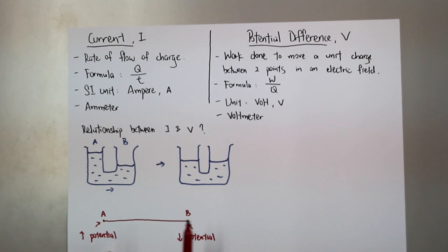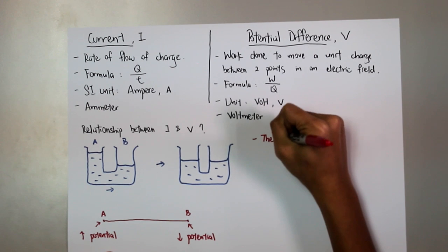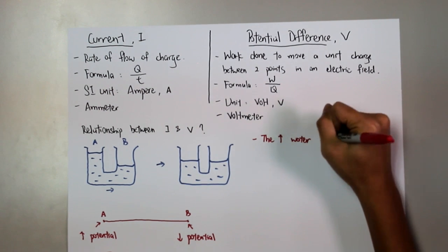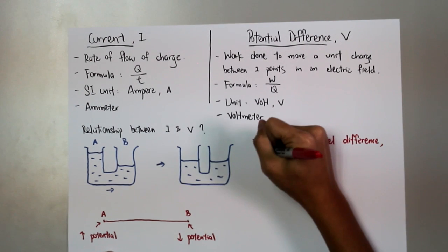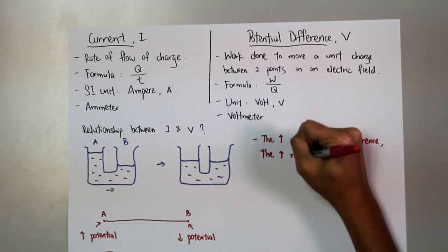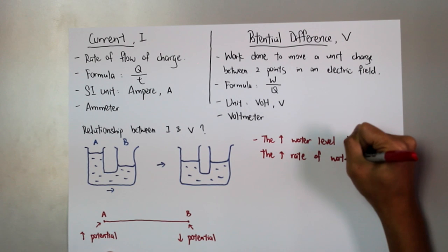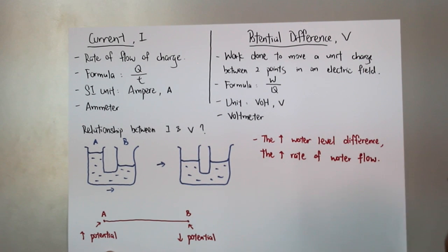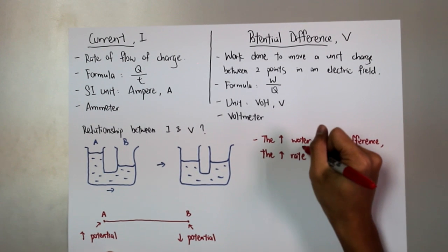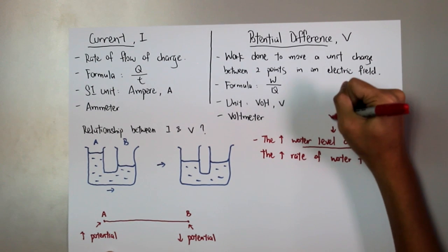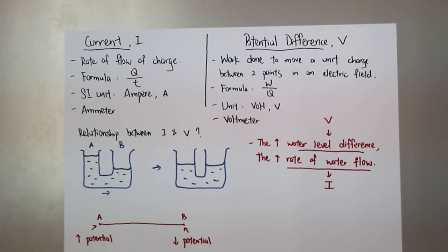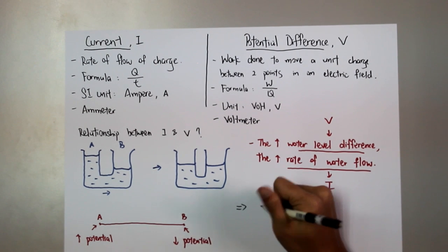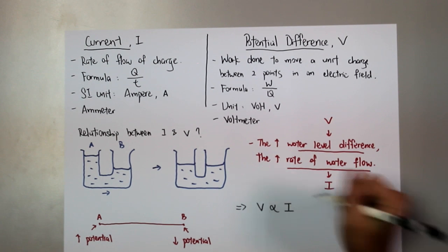Since we said that the higher the difference of water level, the higher the rate of water flow, and we compare this one as the potential difference and this one as the current, therefore, we can say that the potential difference is directly proportional to the current.